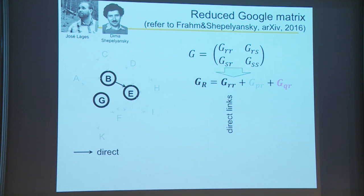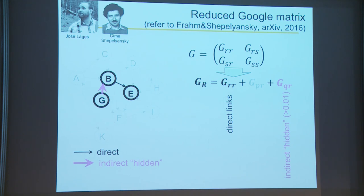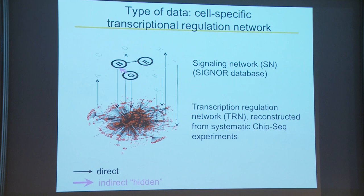The reduced Google Matrix approach — already explained earlier — works as follows: we have a global network and some nodes we are interested in. We have direct interactions inside this smaller network, but using this formula and the GQR term, we can also infer indirect interactions. We decided to use this approach to see how the structure of hidden connections between nodes in the signaling network changes between cancer and normal conditions.